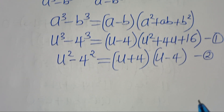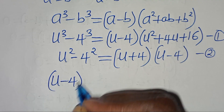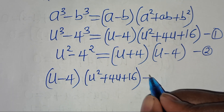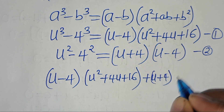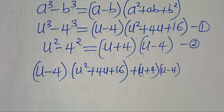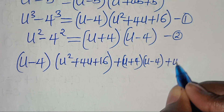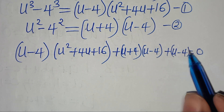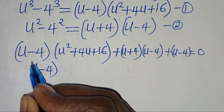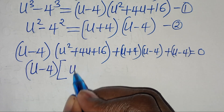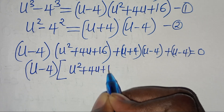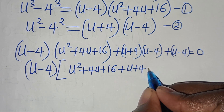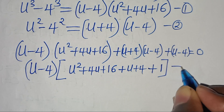This implies we have (u minus 4)(u² plus 4u plus 16), plus (u plus 4)(u minus 4), plus (u minus 4), equals 0. Since u minus 4 is common, we factor it out, giving (u minus 4)(u² plus 4u plus 16 plus u plus 4 plus 1) equals 0. Simplifying inside: u² plus 5u plus 21, equals 0.